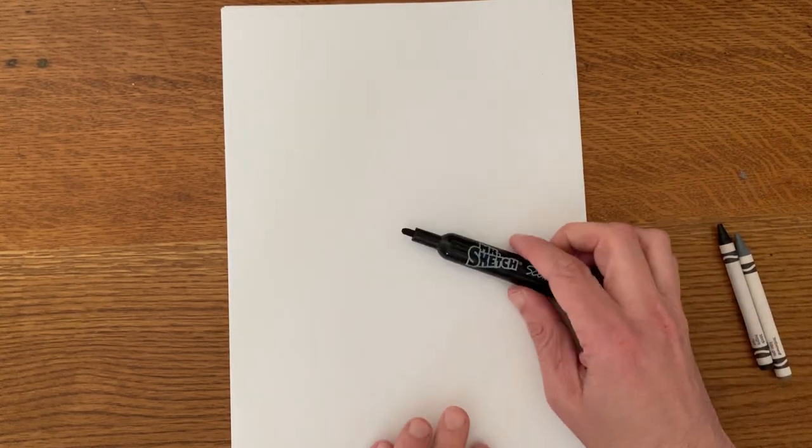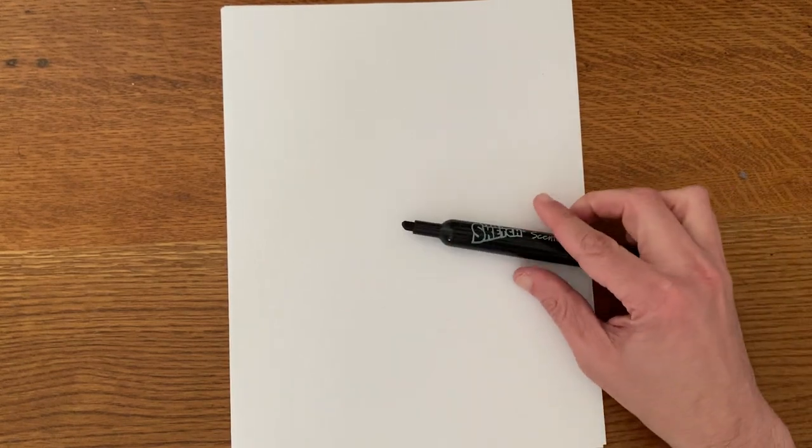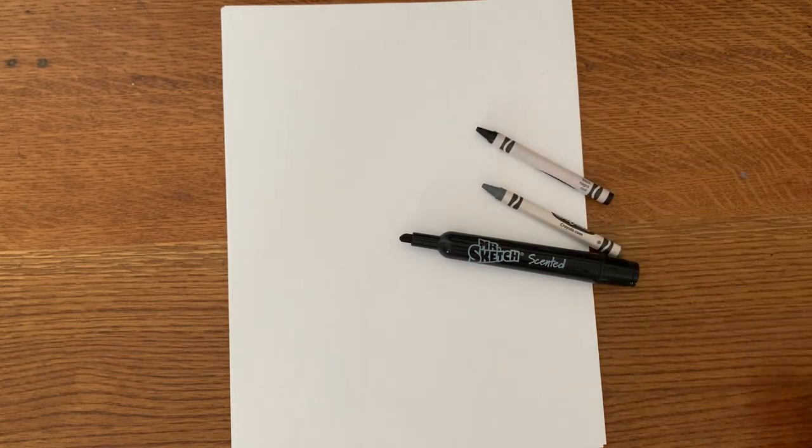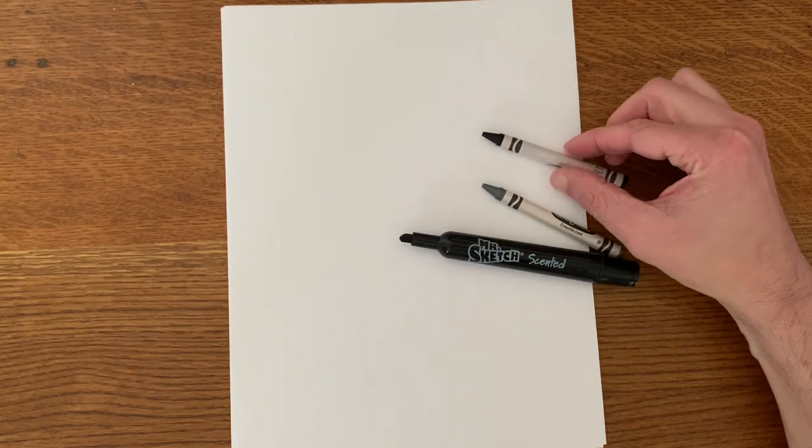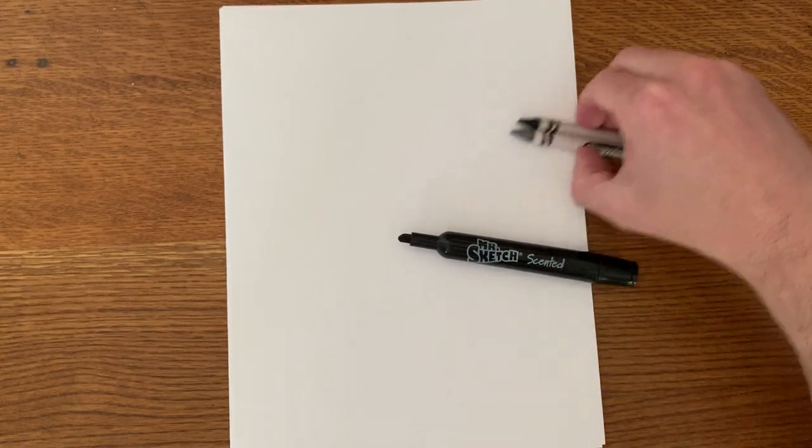Today you're only going to need a black. Now I'm using a black marker to do all of my outline drawing first and then I'm using crayons to color. The only two colors you're going to need are black and gray. And remember you can use whatever materials you have at home, colored pencils, markers, or crayons.